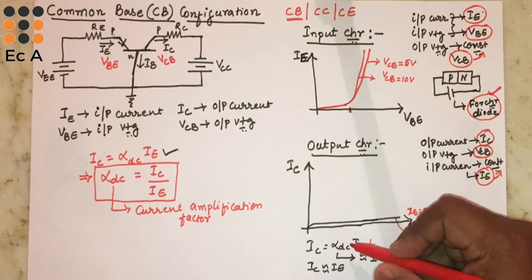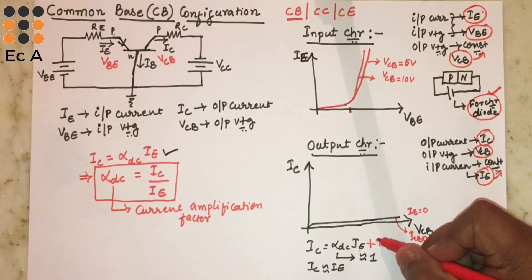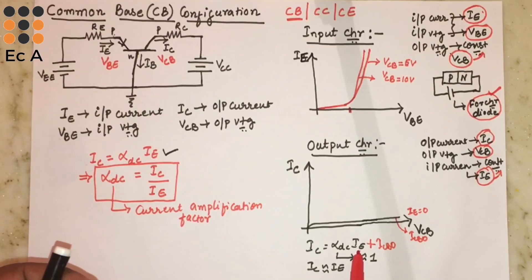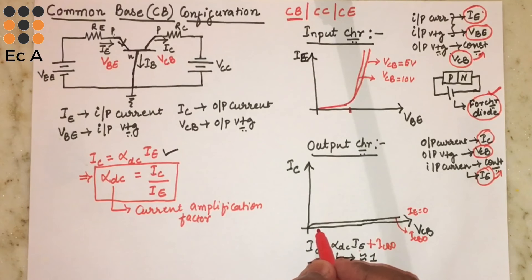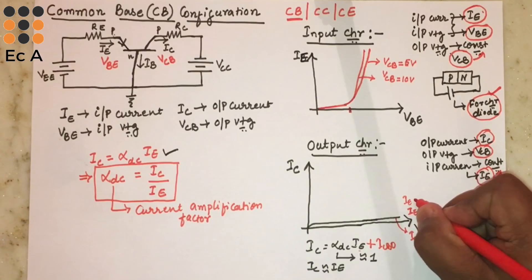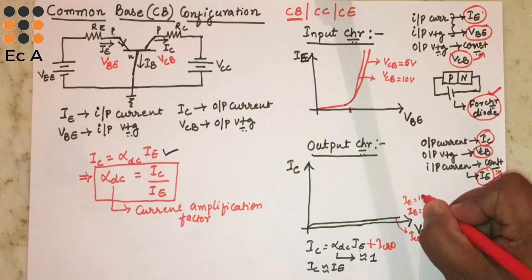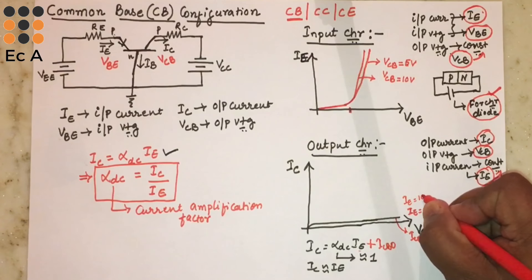When IE is equal to zero, even with zero input current there will be a small current flowing through the transistor. This current is ICBO. So the complete equation should be written as IC = αDC × IE + ICBO. We neglect ICBO because it is very small, which is why it was not written in the simplified equation. If we set IE = 0, IC equals ICBO.